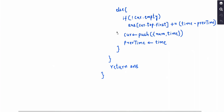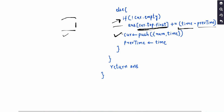Otherwise, if it is the starting of a function, I check if there is already a function in the call stack. If there is, that function was executing and we simply called a new function - so I add the time interval for which the top-of-stack function was executing (current time minus previous time) to that function's exclusive time. Then I push the new function as a pair (function id, current time) onto the stack and update previous time to the current time. This is how the answer array is prepared, and finally I return it.